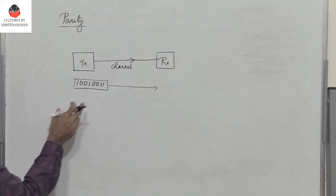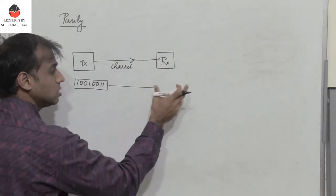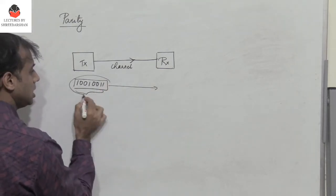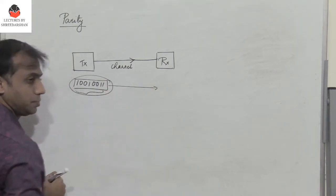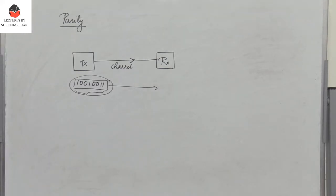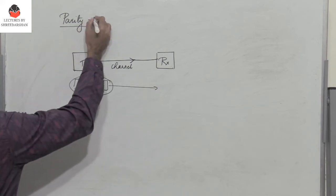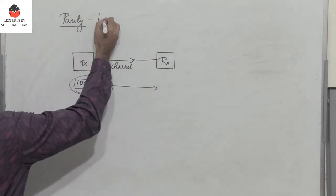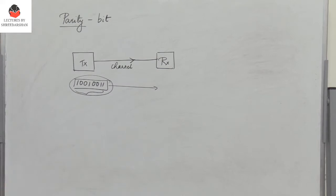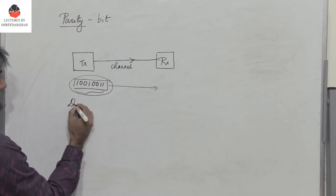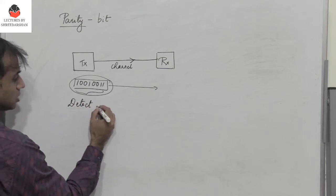When this data reaches the receiver, it is important for us to check if the data received is correct. We need to identify whether there is an error or not, and hence we add an extra bit referred to as the parity bit. Parity is actually used to detect errors.